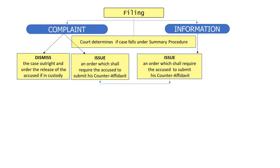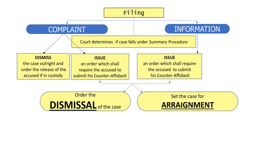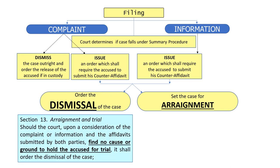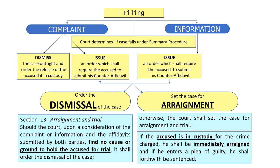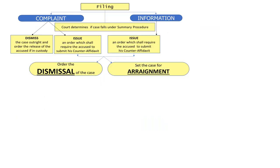After this, what is the next step? The court can order the dismissal of the case or set the case for arraignment. According to Section 13, should the court, upon consideration of the complaint or information and the affidavits submitted by both parties, find no cause or ground to hold the accused for trial, it can order the dismissal of the case. Otherwise, the court shall set the case for arraignment and trial. And if the accused is in custody for the crime charged, he shall be immediately arraigned. If he enters a plea of guilty, he shall be sentenced.